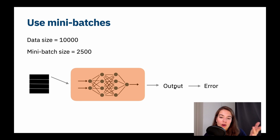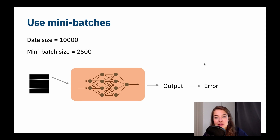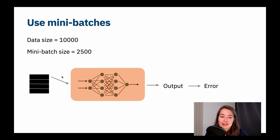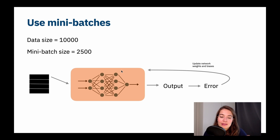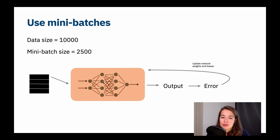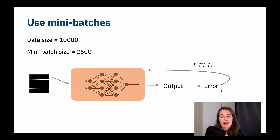This output is used to calculate the error — basically the output minus the actual values in Y. X is input, Y is output, so we're comparing against the target output we wanted to see. This error is then used to update the parameters of the network: the weights of the connections, biases of the nodes, and any other parameters we have.